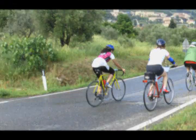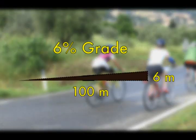Cyclists refer to the steepness of a hill by referring to its percent grade. For example, a hill with a 6% grade means that for every 100 meters you move horizontally, you increase your altitude by 6 meters.